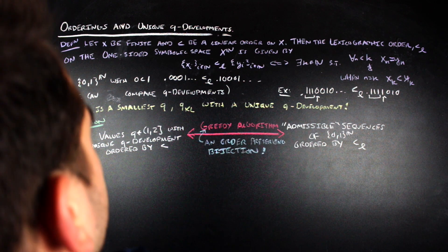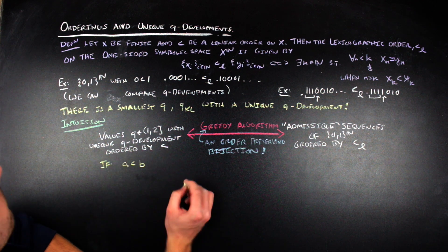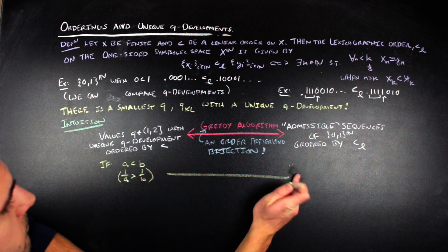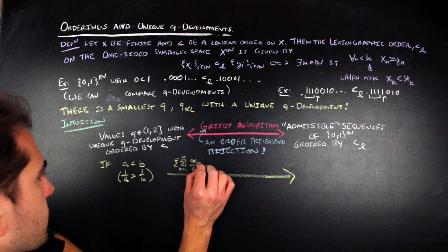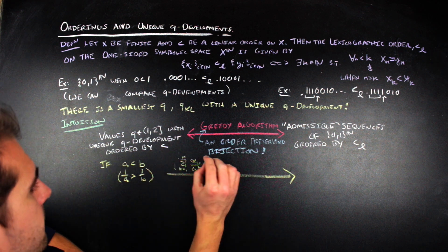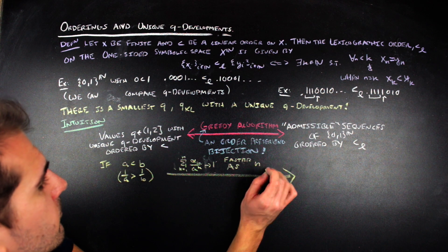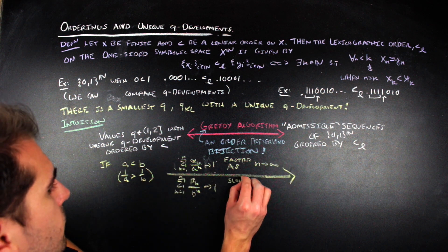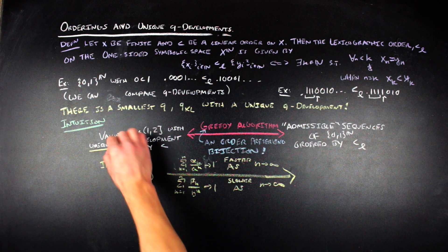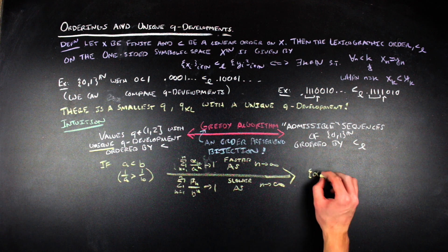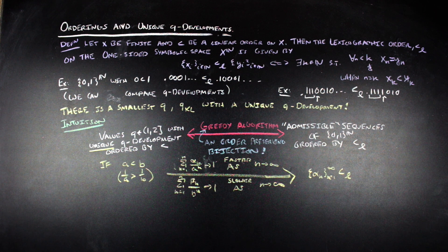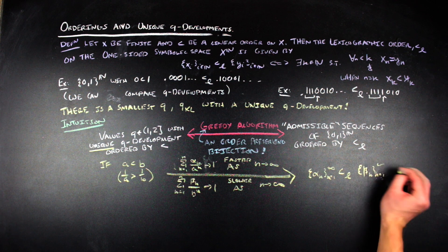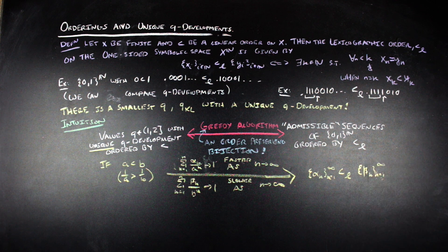The order-preserving part can be motivated from an intuitive standpoint. If a is less than b and both give unique q-developments, then the series for a will approach 1 faster than the series for b will, since 1/a is bigger than 1/b and we're using the greedy algorithm — taking as large a portion of 1 as we can at each step. Note that 1/a being bigger than 1/b also holds for powers of 1/a and 1/b. So the first time the series for a has a 0, the corresponding b term may be small enough as to not exceed 1; if this were not the case, a power of 1/b would be strictly greater than the corresponding 1/a term, which would be a contradiction.